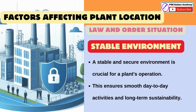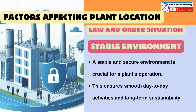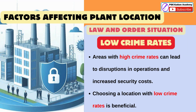Now, let's see one by one the factors affecting plant location planning. Law and Order Situation: A stable and secure environment is crucial for a plant's operation, ensuring smooth day-to-day activities and long-term sustainability. Low Crime Rates: Areas with high crime rates can lead to disruptions in operations and increased security costs, so choosing a location with low crime rates is beneficial.